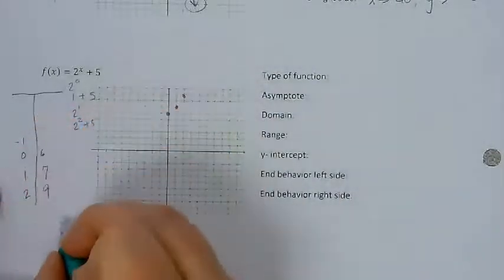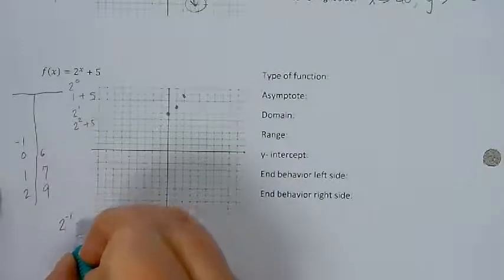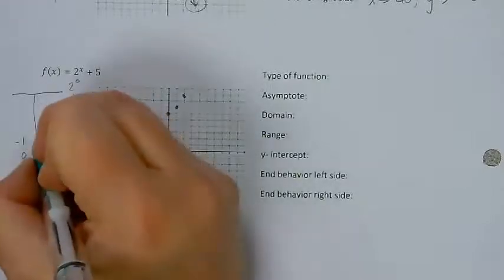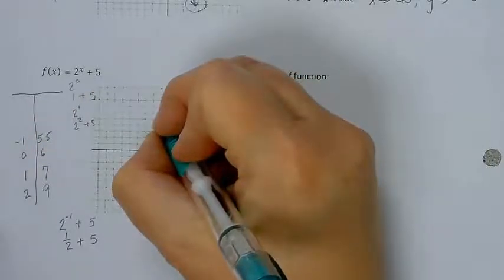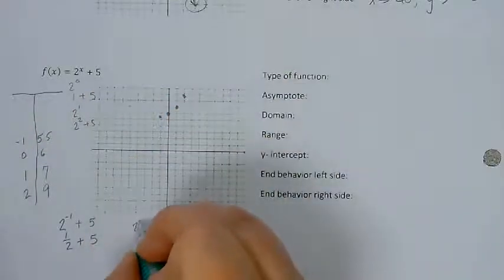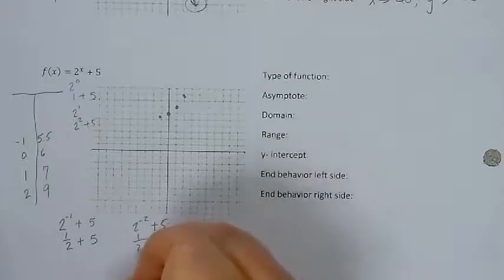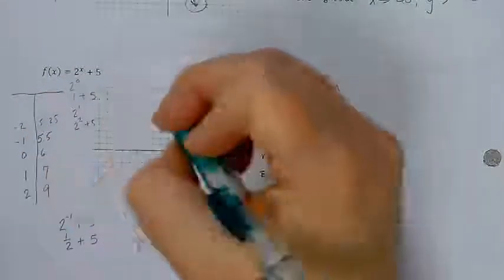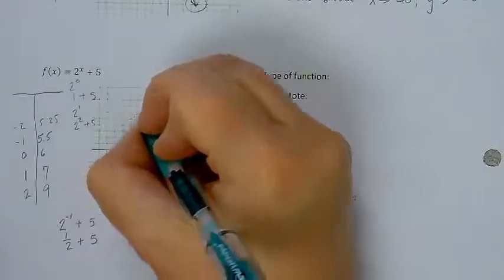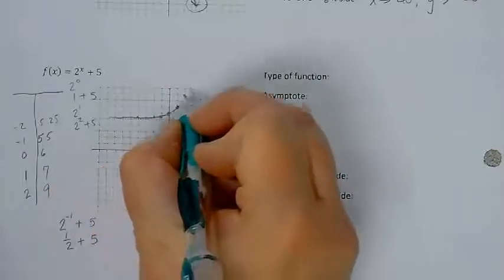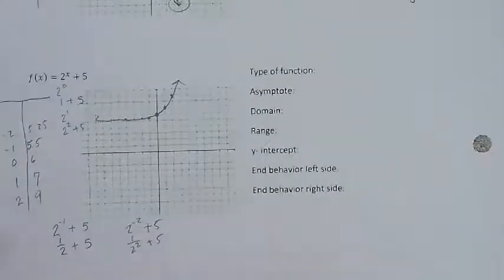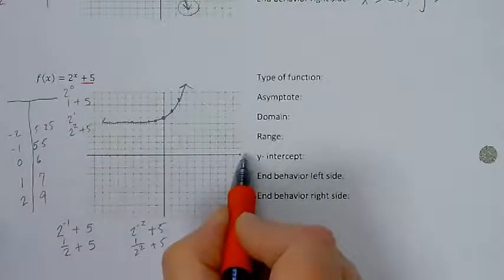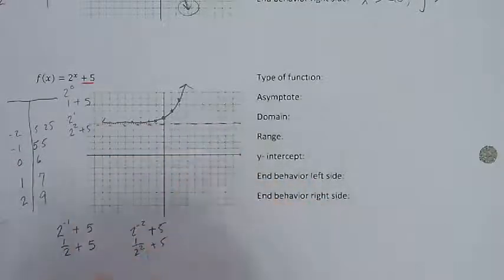On the other side, if I put negative 1 in, I have 2 to the negative 1 power, add 5. 2 to the negative 1 is one-half, add 5 is 5.5. If I do 2 to the negative 2, add 5, this becomes 1 over 2 squared plus 5, which is one-fourth plus 5, or 5.25. So 5.25, 5.125 — this just keeps getting closer and closer to 5. This plus 5 is going to shift our graph up 5 units, so instead of having an asymptote at 0, the asymptote moves up to y equals 5.